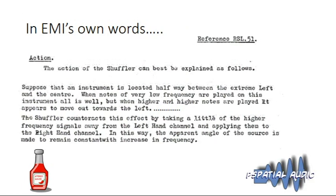This next quote comes from the RED 51 user manual: 'The action of the shuffler can best be explained as follows: suppose that an instrument is located halfway between the extreme left and the center. When notes of very low frequency are played, all is well, but when higher notes are played it appears to move out towards the left. The shuffler counteracts this by taking a little of the higher frequency signals away from the left channel and applying them to the right, so the apparent angle remains constant with increase in frequency.'